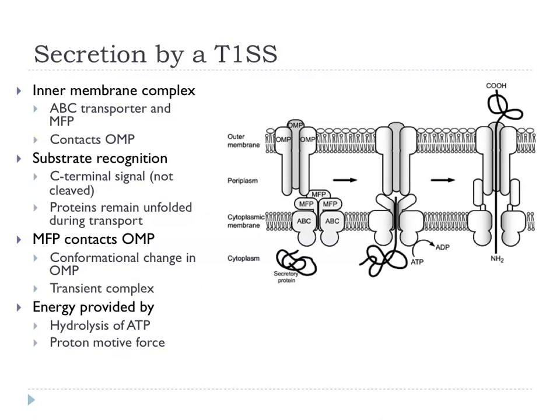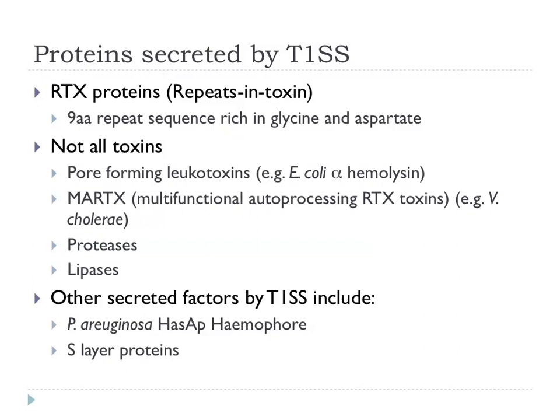Quite a lot of different proteins go through type 1 secretion systems. There is a whole family called RTX proteins — commonly toxins — which have a nine amino acid repeat sequence rich in glycines and aspartates. These are very long proteins, often around 1,000 amino acids, and this whole family goes through the type 1 secretion system. There are also leukotoxins, proteases, lipases, S-layer proteins, and proteins involved in iron scavenging also going through the system.